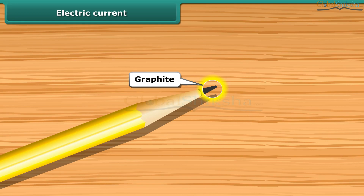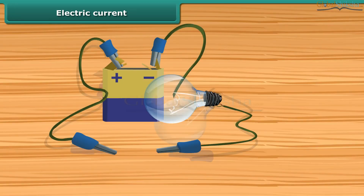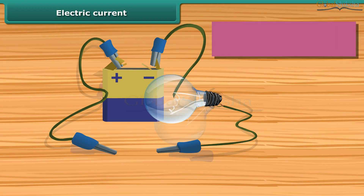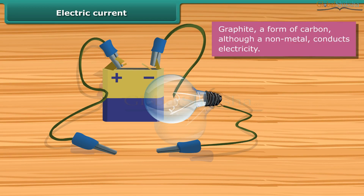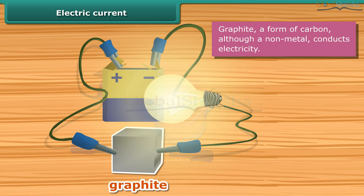Graphite is a form of carbon. It is a non-metal, but it is a conductor of electricity. It can be tested whether a given material is a conductor of electricity or not by placing the given material between the free ends of wires in an electric circuit. Bring the free ends of the two wires close and let them touch each other.